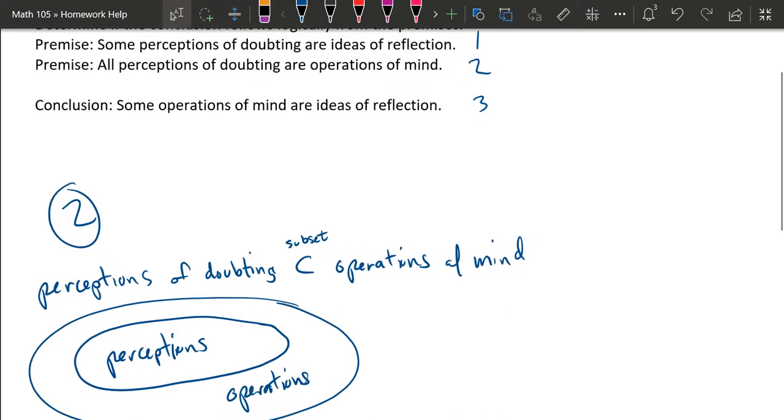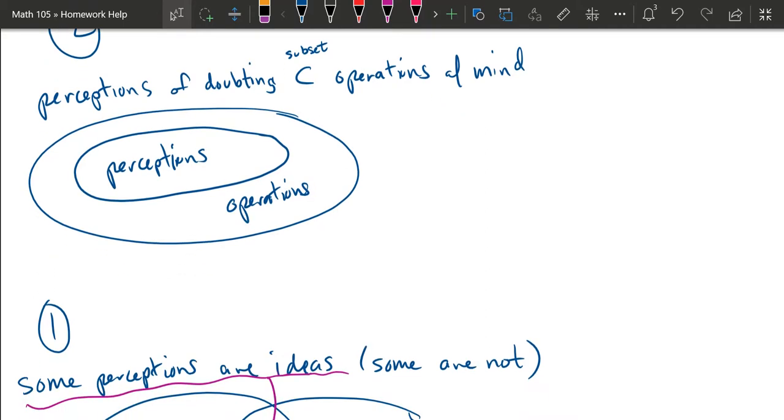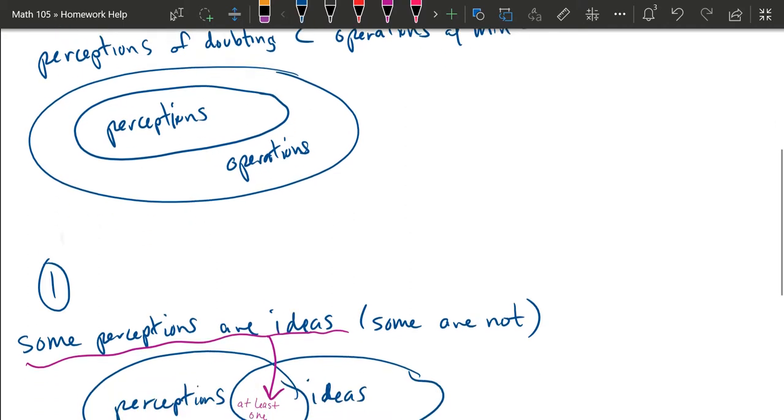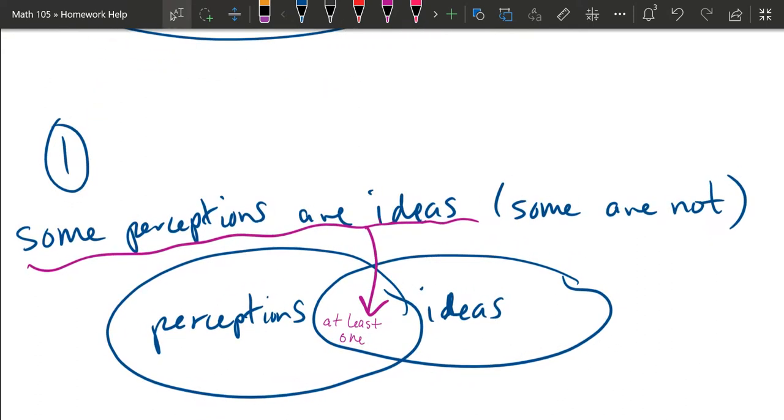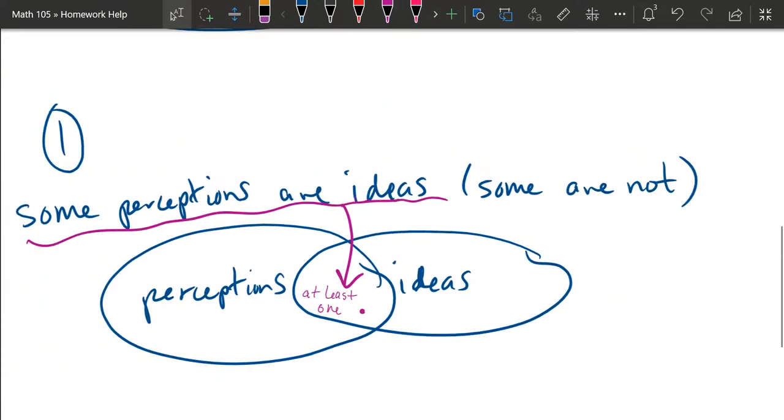Now we're going to look at premise one which says some perceptions of doubting are ideas of reflection. So some perceptions are ideas. But also some are not. So it's not saying that all perceptions are ideas. It's saying that some of them are. So in this Venn diagram you don't get any subset necessarily. What you do get is the standard two circle Venn diagram. And this idea of some perceptions are ideas means that the intersection, the middle part, is not empty. One way to say that there's at least one perception that's also an idea. And sometimes we just represent that with a little dot meaning there is something in there. It's not empty. So that's what premise one means.